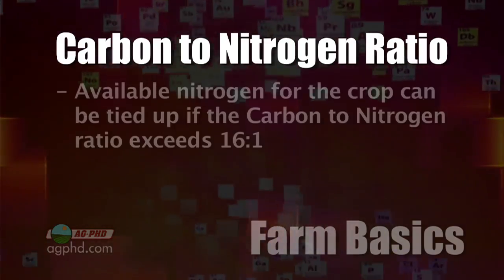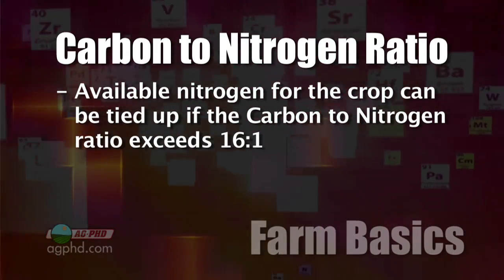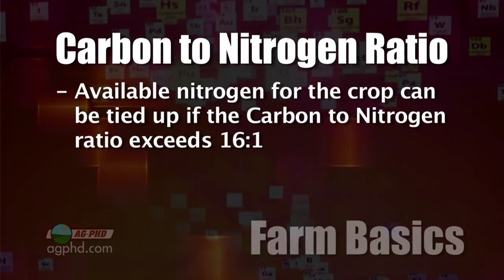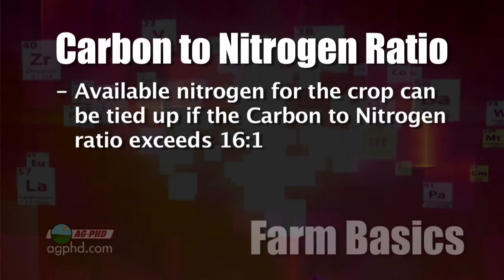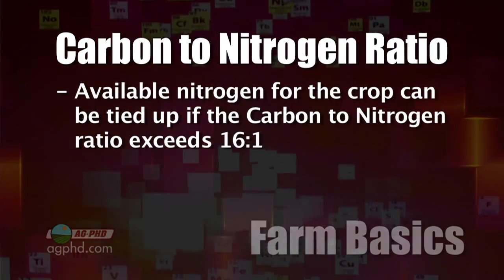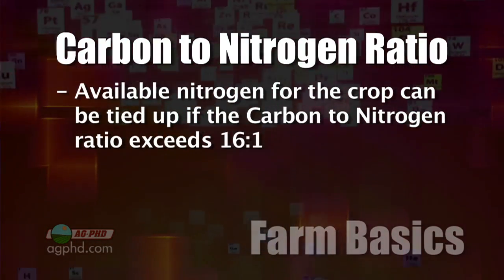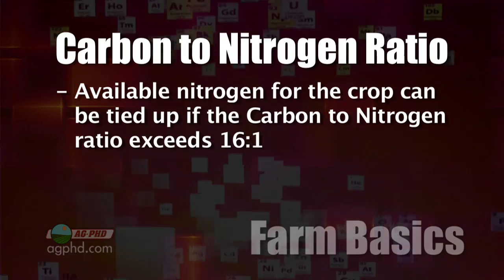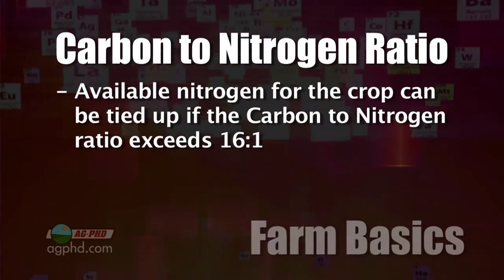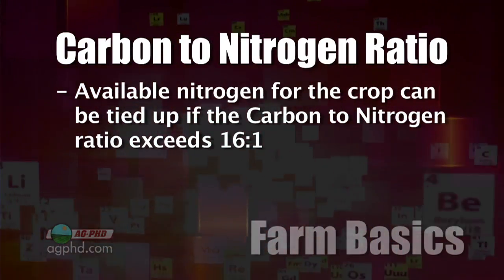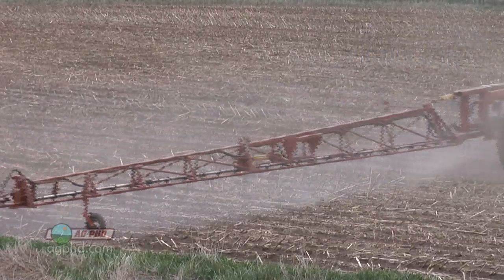Here's what it really comes down to. If the carbon to nitrogen ratio is too high — and the number is a little debatable — we believe the number is somewhere around 16 parts carbon to one part nitrogen. If the ratio is higher than that, so let's say it's 40 to 1 or 80 to 1, and a farmer goes out and sprays more nitrogen on...